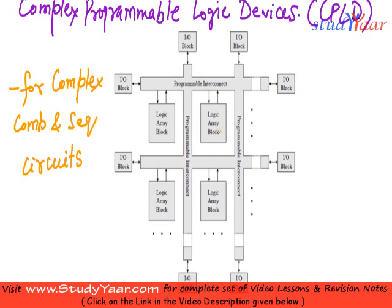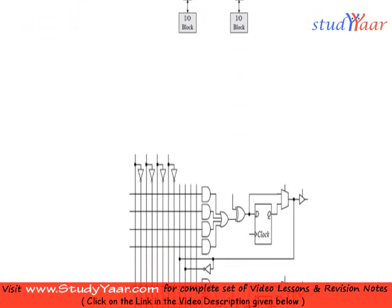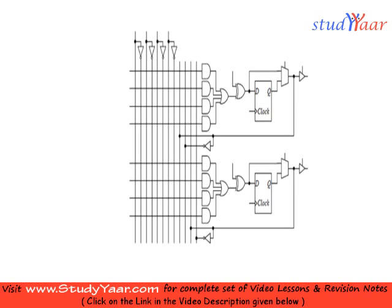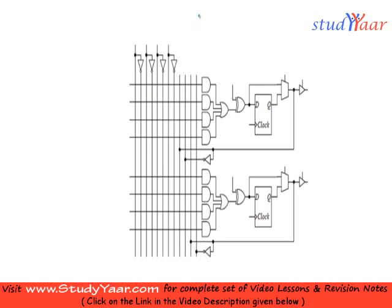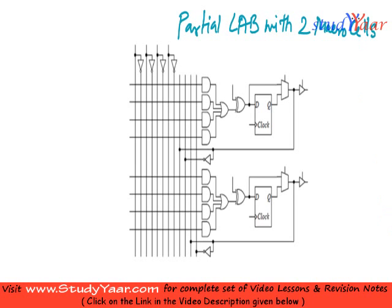Your logic array block consists of 16 macro cells. This is a macro cell — this is one macro cell. This is basically a partial LAB with two macro cells.